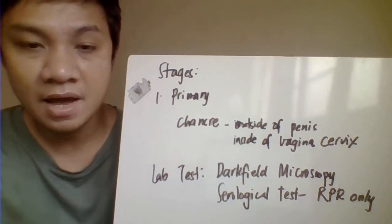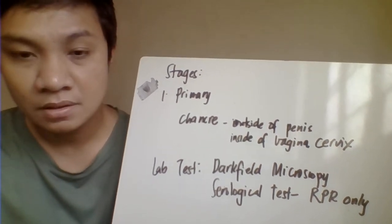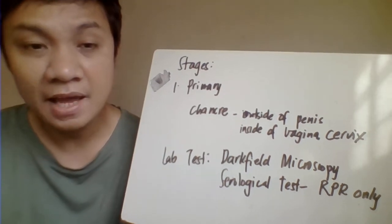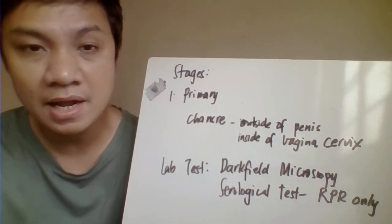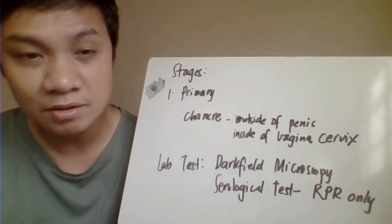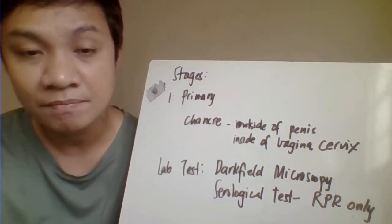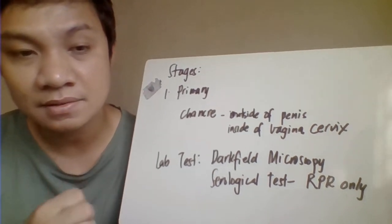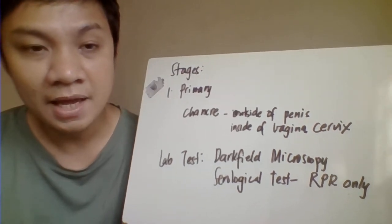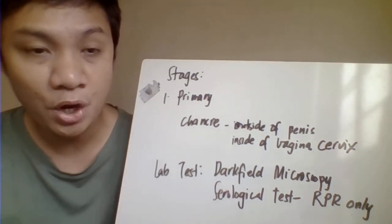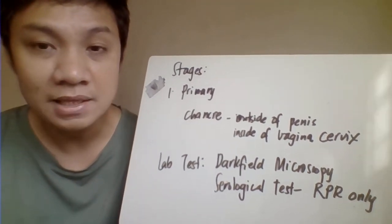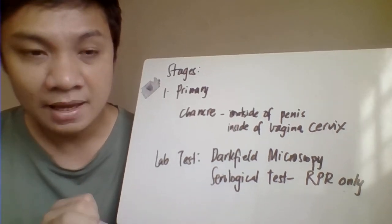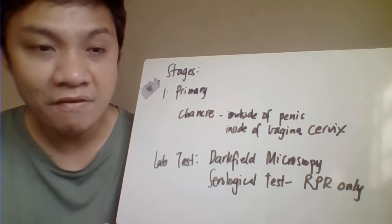The primary stage of syphilis is characterized by the entry of the bacteria into the body. There is thickening of the endothelial cell membrane plus aggregation of lymphocytes, macrophages, and plasma cells. The primary stage is characterized by the appearance of a chancre or lesion occurring 10 to 90 days after infection. This lesion is solitary and painless with well-defined borders.